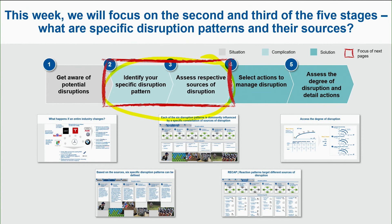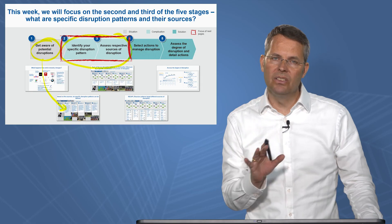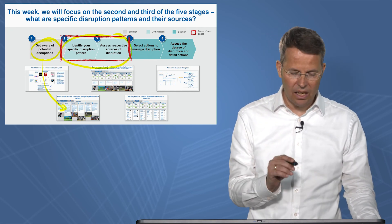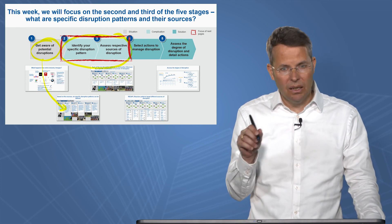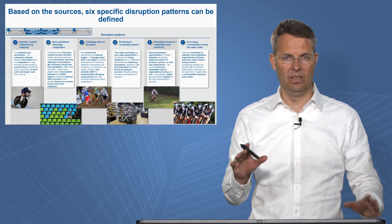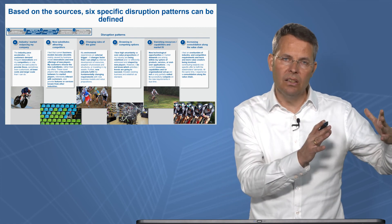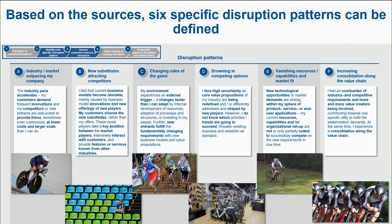In our flowchart, step one was getting aware of the potential disruption — knowing what influences are there in your industry and what might change. Now in step two we try to structure those further in order to show patterns, which help us better define an individual reaction. I will introduce the six patterns we identified, first at a basic level, then go deeper into each in the following videos.